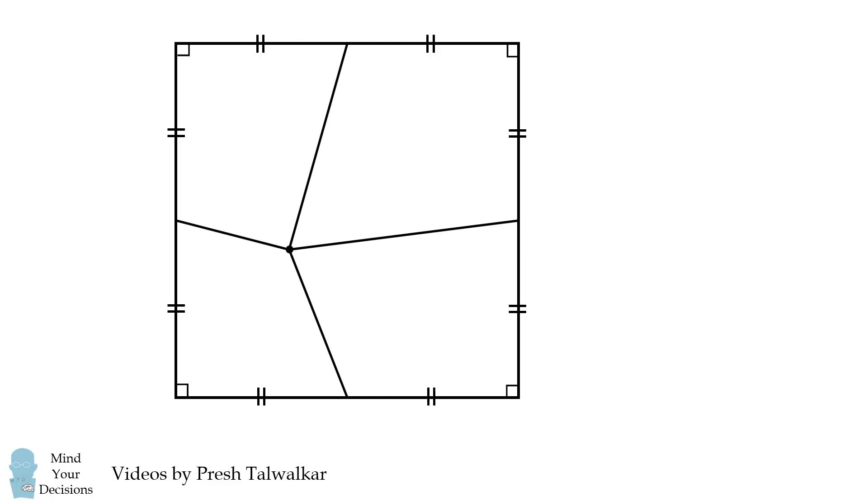The area of the southwest region is 16 square centimeters. Then going clockwise, the area of the next region is 20 square centimeters and then 32 square centimeters.